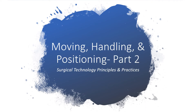Hi, everyone. In this lecture, we are going to continue our discussion of moving, handling, and positioning the surgical patient, which is chapter 18 in our surgical technology book. In this part two of a part three series, we are going to be talking about the principles of safe positioning, as well as potential patient injuries, then a general overview of the operating room table, and three positions which will all be slight variations of supine: supine, Trendelenburg, and reverse Trendelenburg.